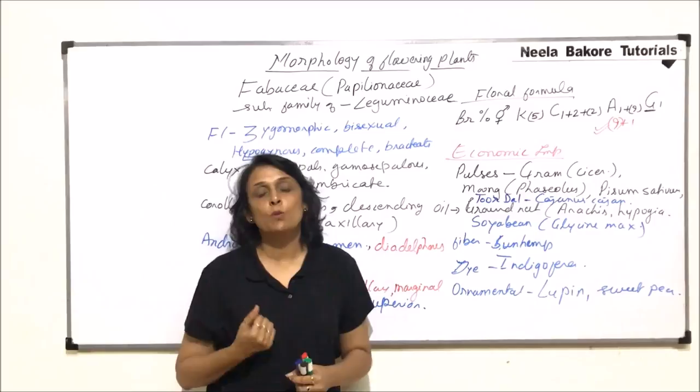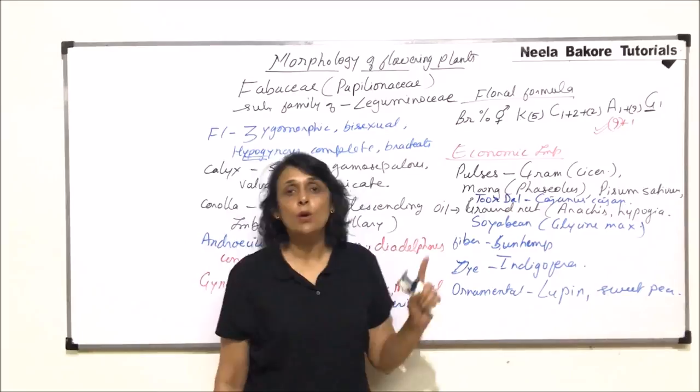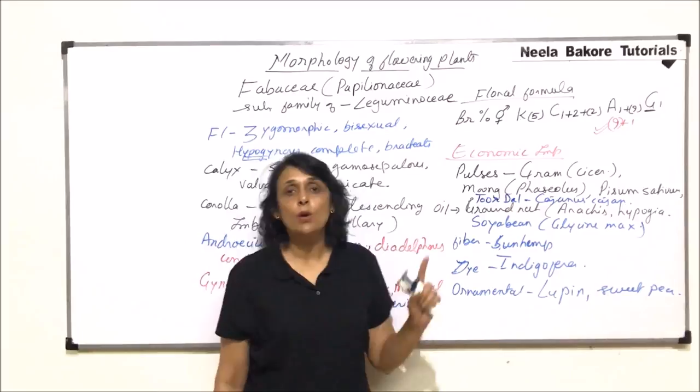So these are the plants of this particular family which are most important. And the most important which we can remember is the pea plant which we eat also. The Pisum sativum on which Mendelian work was done. So all these plants are of very high importance and they all belong to Fabaceae or Papilionaceae family. In the next video we will take up another family.